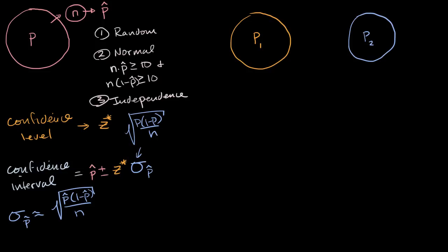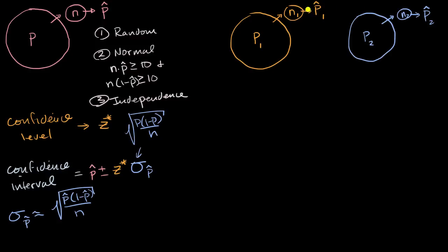Just as before, for each population we take a sample. We take a sample of size n1 from population one and calculate sample proportion p-hat one, and a sample of size n2 from population two and calculate sample proportion p-hat two. Note that n1 and n2 do not have to be the same size — that's a common misconception. After this, we check conditions for inference: do both samples meet the random, normal, and independence conditions?